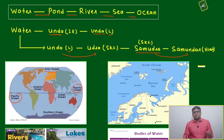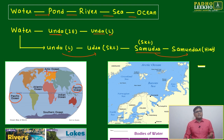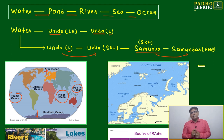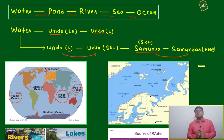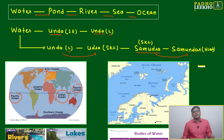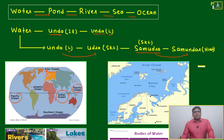Easy ways to remember: between Japan and America it is the Pacific Ocean; between America and Africa it is the Atlantic Ocean; above (north) is the Arctic, which is related to the North Pole; below (south) is the Southern Ocean; and near India is the Indian Ocean.